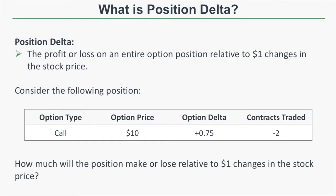So what is position delta? Well, position delta is the expected profit or loss on an entire option position relative to $1 changes in the stock price. So for example, consider the following option position.